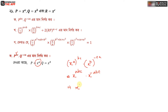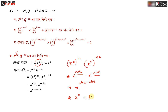So x to the power 0 gives a, b, c. So x to the power 0 is a, b, c.